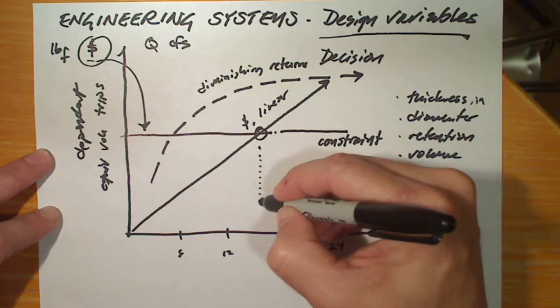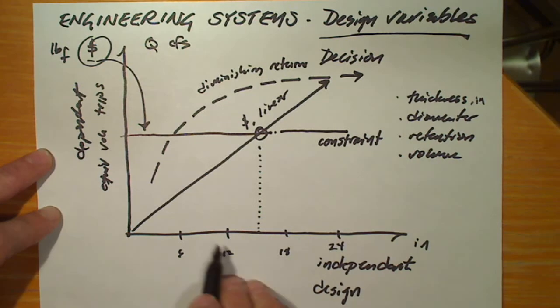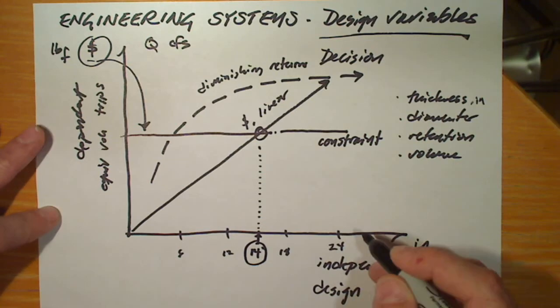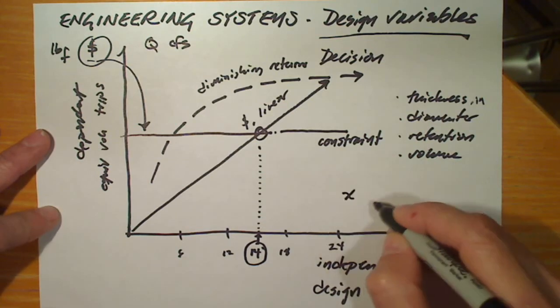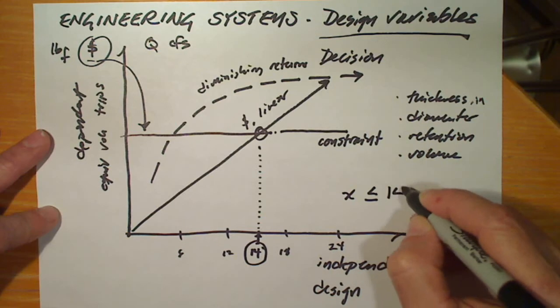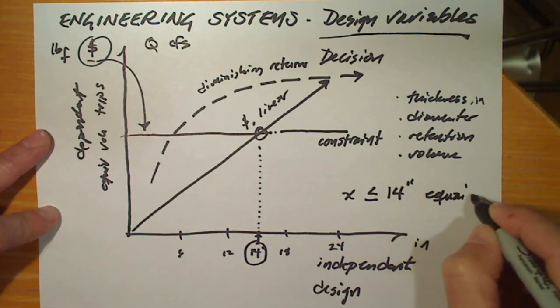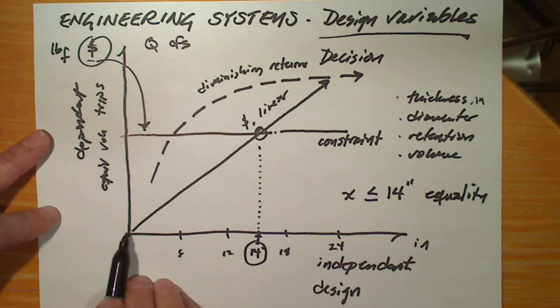That means that the largest possible pavement thickness, as we've got it worked out on this graph, might be 14 inches. Our thickness, we'll choose the variable x, has to be less than or equal to 14, which is an inequality constraint. Anything less than 14 might be considered feasible.